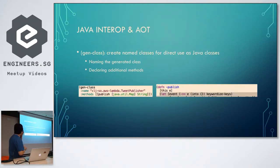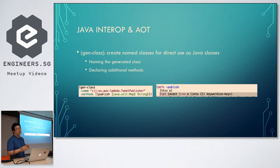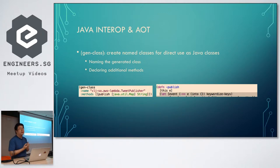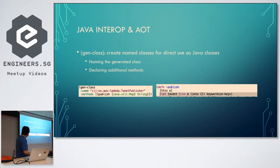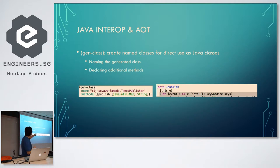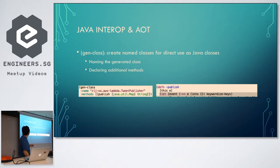First is Java interop. Without talking too much about how to call a Java function, what we use here is gen-class. It helps us create Java classes where we can specify the name and also the methods. In my case, I want to make a Java class called TwitterPublisher with some namespace. I specify the methods — publish something. Then in my namespace, I only need to define this method as dash-publish. Clojure will solve everything — it will generate a class with the package name, class name, and include the publish method.